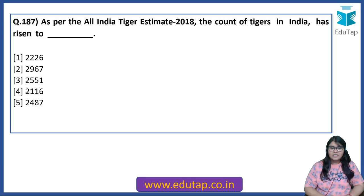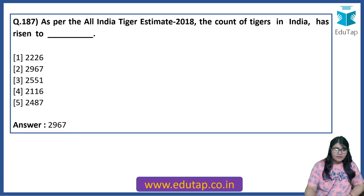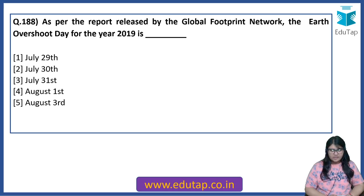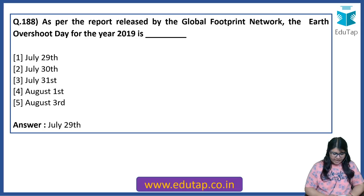As per the All India Tiger Estimate 2018, the count of tigers in India has risen to 2,967. As per the report released by the Global Footprint Network, the Earth Overshoot Day for the year 2019 is July 29th. That is declared as the Earth Overshoot Day for 2019.